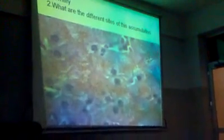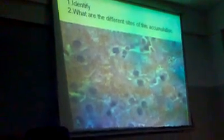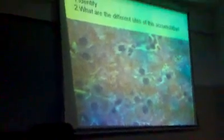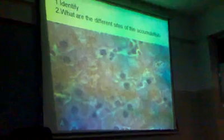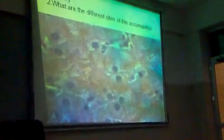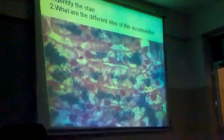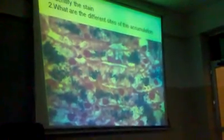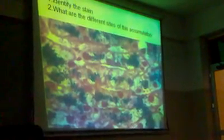This is another brown pigment in the hepatocytes — this is iron. How do you confirm that it is iron? You will see in the next slide — this is the Prussian blue reaction, which stains iron blue. This is called the Prussian blue reaction.